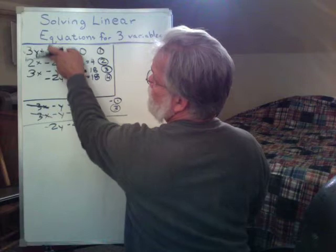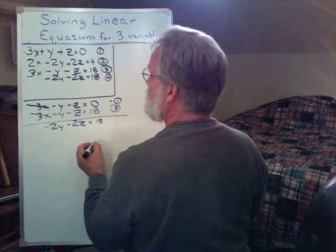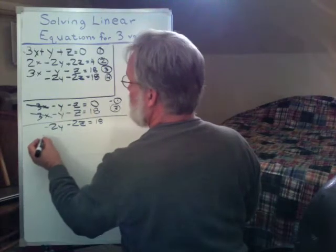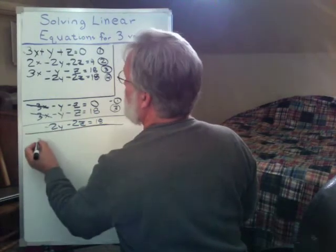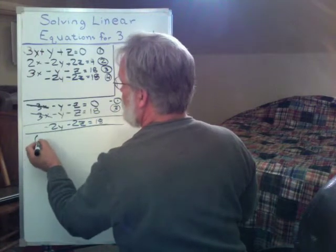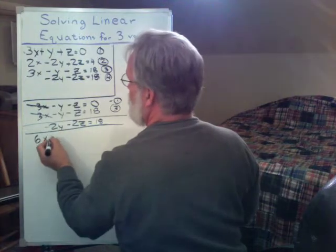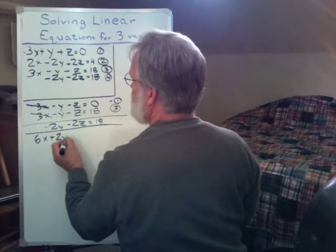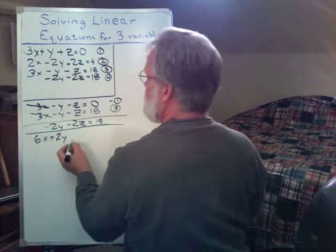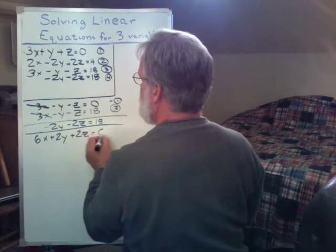In other words, I just multiply it by the coefficients that I'm trying to get rid of. So what I'll now do is I've got 3x times 2 is 6x. 2y times 2 is 2y. 2 times positive z is positive 2z. And of course, 2 times 0 is 0.